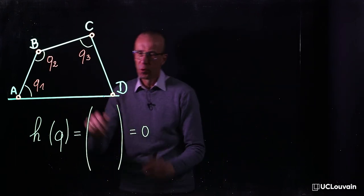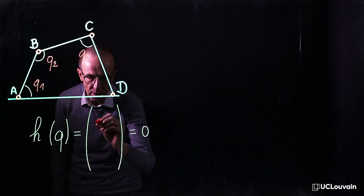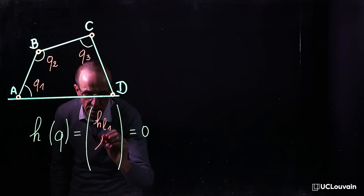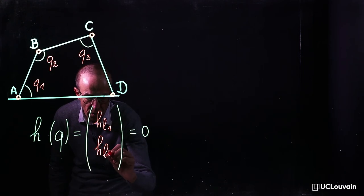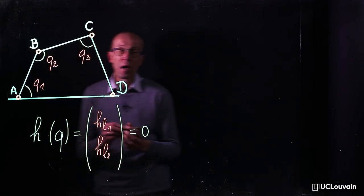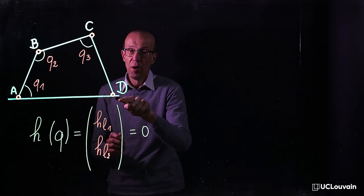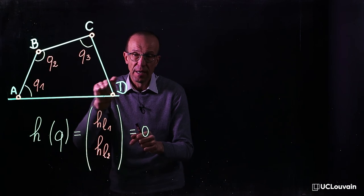two loop constraints, let's say hℓ1 and hℓ2, are required to express the closure of the mechanism, for instance at the hinge D.